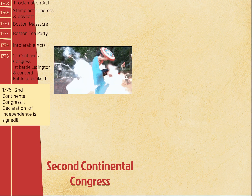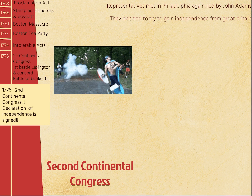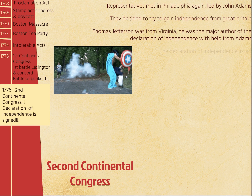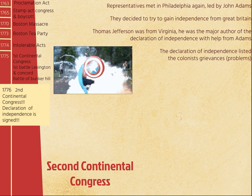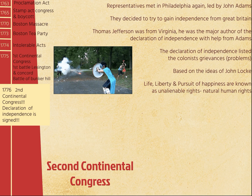The Second Continental Congress comes around and things change. All thirteen colonies sent representatives to meet in Philadelphia, again led by John Adams. They decided they were going to gain independence from Great Britain — enough is enough. Thomas Jefferson, from Virginia, drafted the Declaration of Independence with John Adams. It listed the colonists' grievances, or problems, with the British government, and was based on the ideas of John Locke: life, liberty, and pursuit of happiness — unalienable rights that are natural human rights you are born with and that should not be infringed upon.